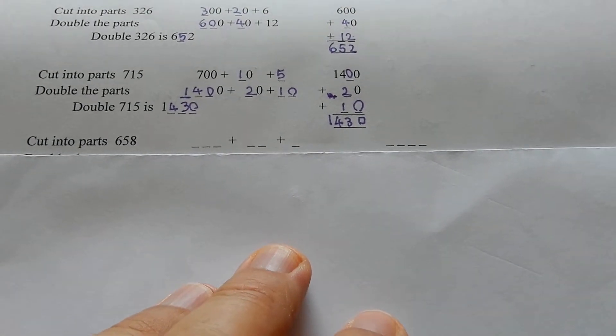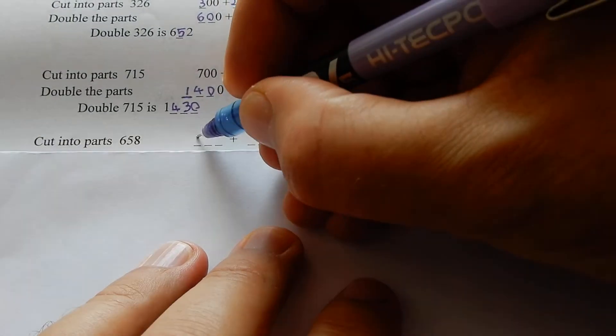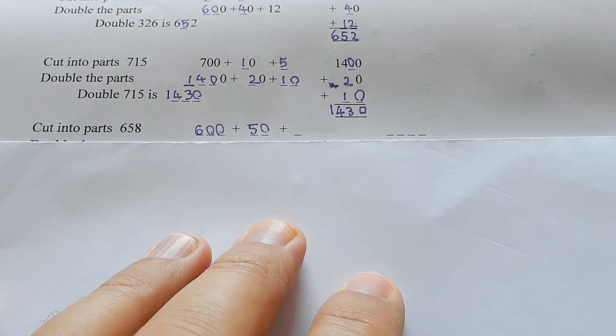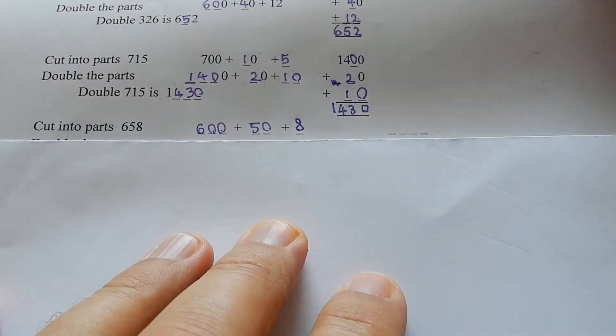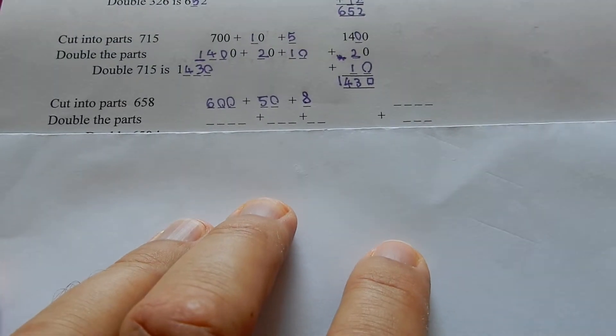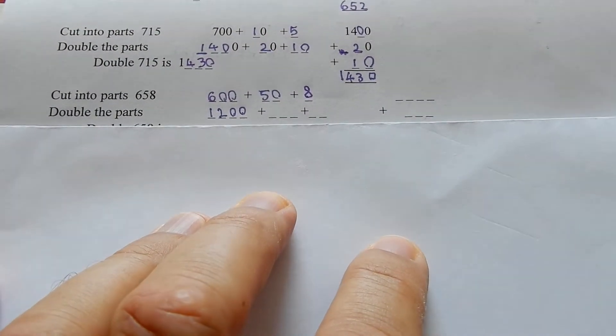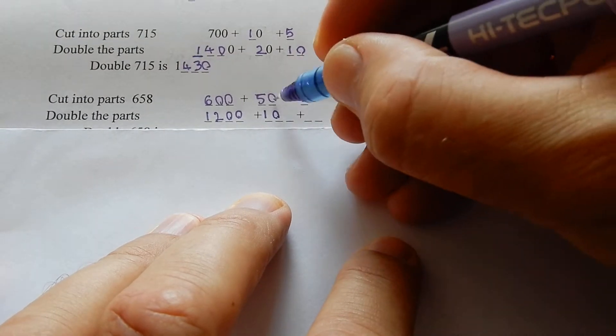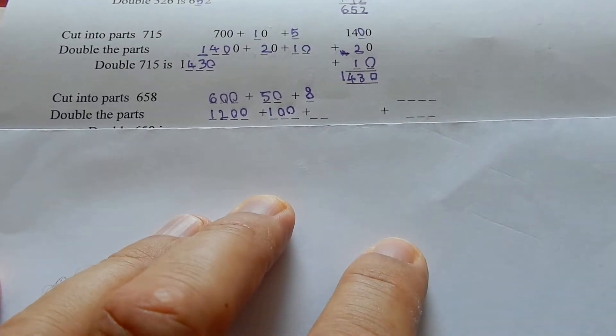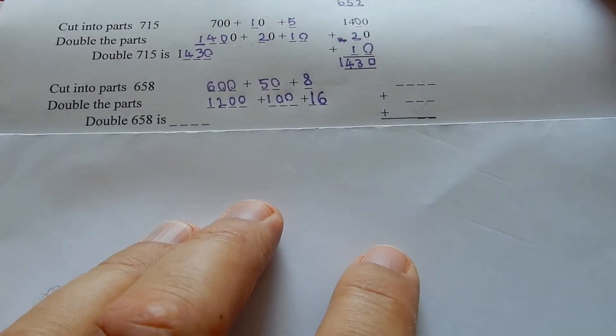Next one: cut it into parts. 658, get into the more difficult ones, they're all 5 or above. Cut into parts: 600 plus 50 plus 8. Your mum and your dad probably do this in their heads rather than writing on paper, but that's okay. Writing on paper shows you how to do it. Double 6 is 12, 1200. Double 5 is 10, 100. Double 50 is 100. Double 600 is 1200. Double 8 is 16.